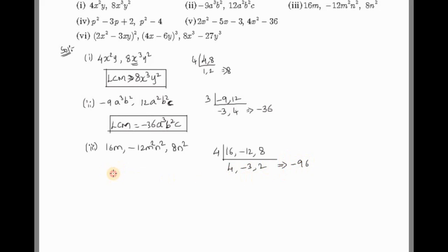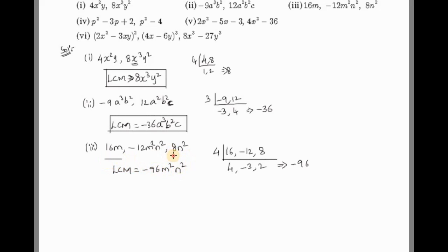The LCM of the numbers is -96. Now for the variables m and n: the highest power of m among the terms is m², and the highest power of n is n². So the final LCM is -96m²n².